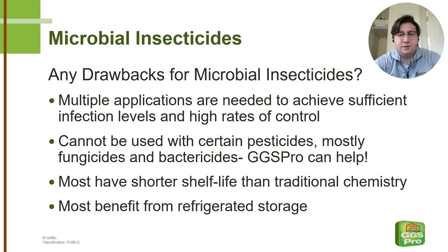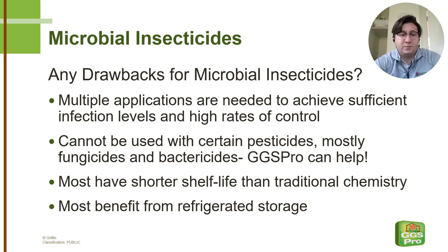As previously mentioned, our objective is to continuously keep a high level of inoculum on the target pest. Repeated applications ranging from every 3 to 10 days may be needed, with higher frequencies corresponding with higher pest pressure. Many of these are not systemic products, so good coverage when spraying is needed. This makes fogging these pesticides an effective means of application.